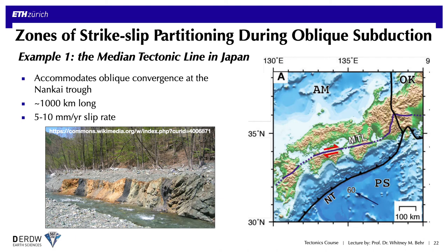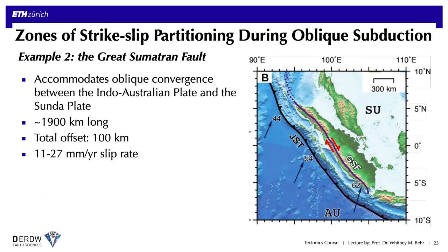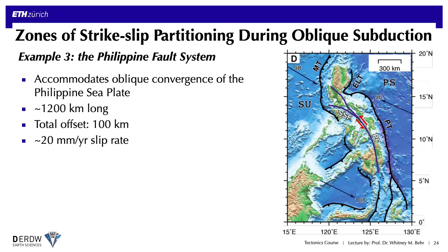One well-known example is the Median Tectonic Line running through southern Japan — a roughly 1,000-kilometer-long, somewhat transpressional strike-slip fault associated with oblique subduction along the Nankai Trough, with a slip rate of about 5 to 10 millimeters per year. Similarly, the Great Sumatran Fault accommodates oblique convergence between the Indo-Australian Plate and the Sunda Plate — a massive 1,900-kilometer-long structure moving up to 27 millimeters per year. The Philippine Fault System accommodates oblique convergence of the Philippine Sea Plate within the Philippine Archipelago, is also large and hazardous with several historical M6+ earthquakes, and moves at about 20 millimeters per year.